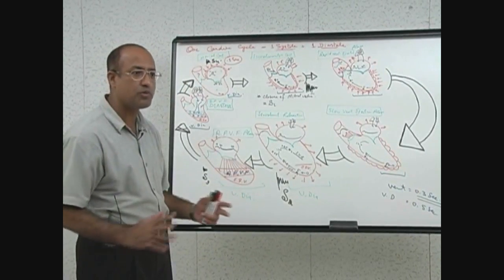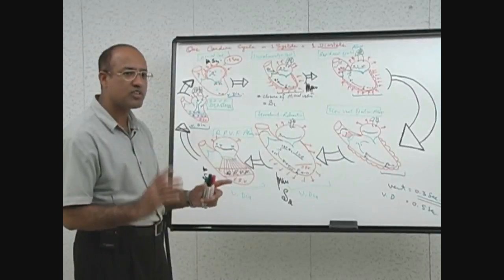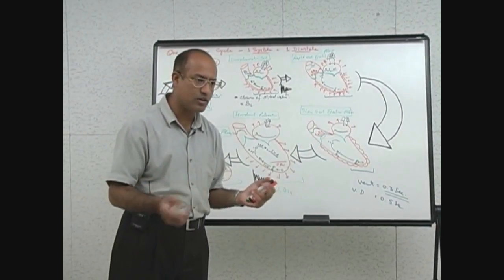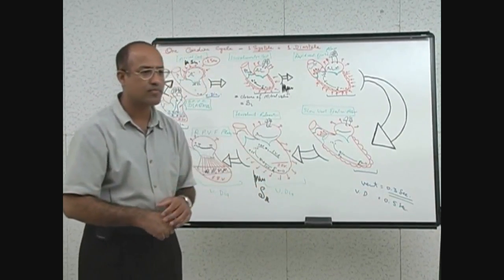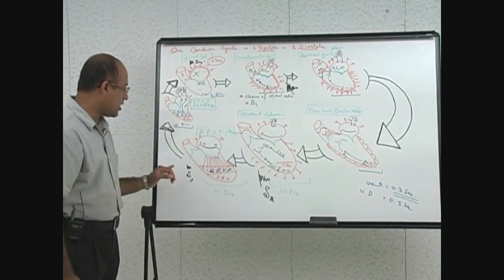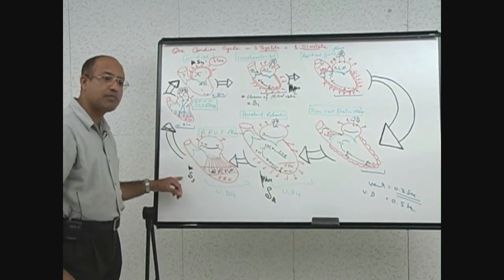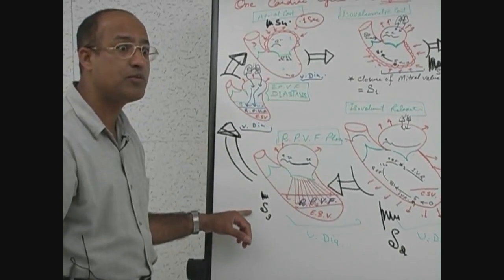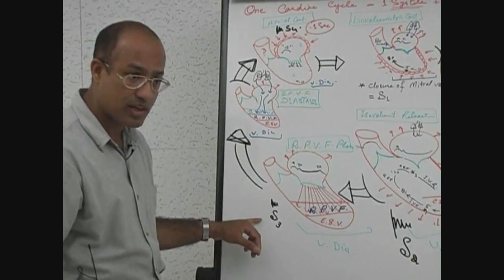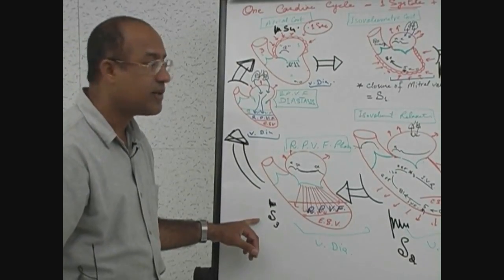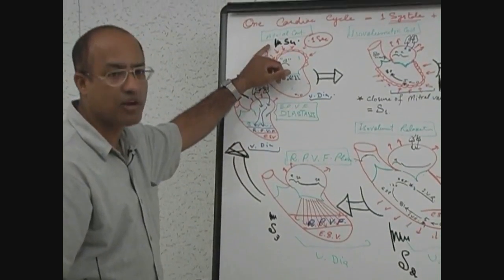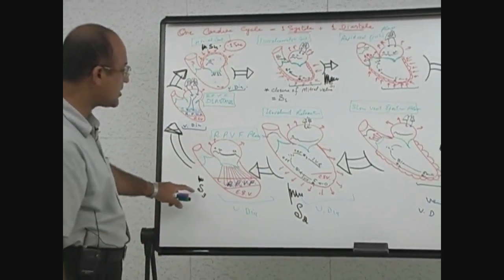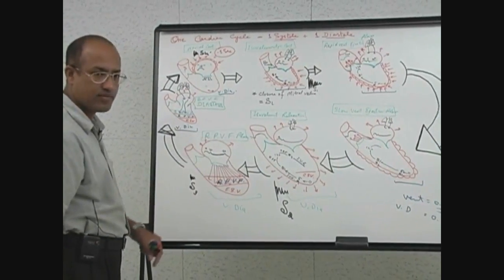A student asks about pathological manifestations of S3 besides young people after exercise. S3 may be seen in young people especially after exercise because rapid venous return from peripheral tissue can produce S3. However, S4 is usually pathological. S3 is a sound produced due to rapid ventricular filling.